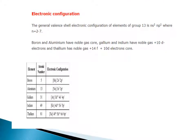Electronic configuration. The general valence electronic configuration of elements of group 13 is ns² np¹, where n is equal to 2 to 7. Boron and aluminium have a noble gas core, while gallium and indium have noble gas plus 10 d-electrons. Thallium has noble gas plus 14 f plus 10 d-electrons.